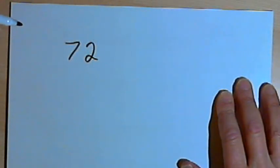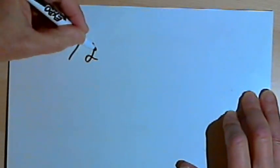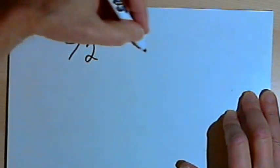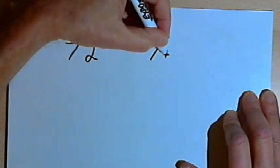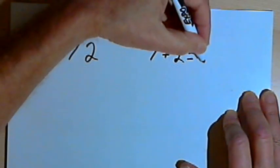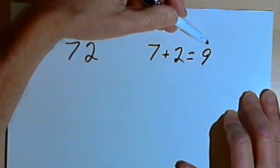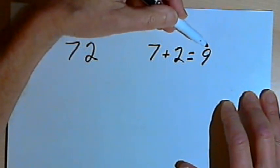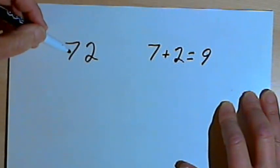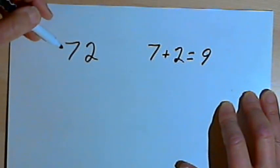Take the number, let's say we've got 72. I want to know if I can divide that by 9. Take the digits in the number and add them together. So I'm going to add together 7 plus 2. 7 plus 2 equals 9. If I end up with a 9 after that addition, it means that my original number, the 72, is also divisible by 9.